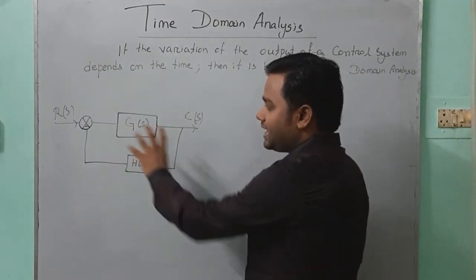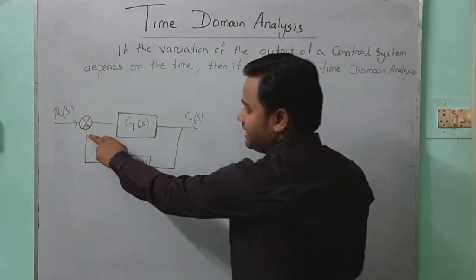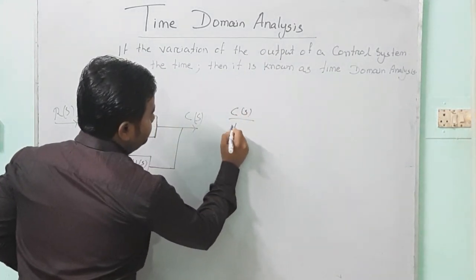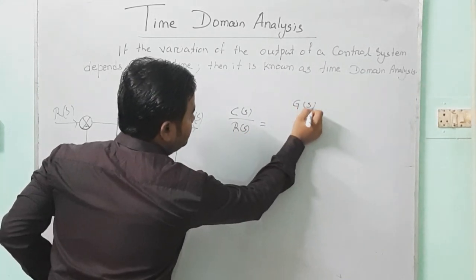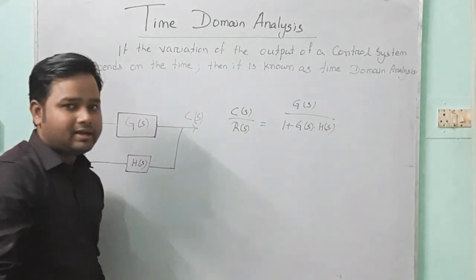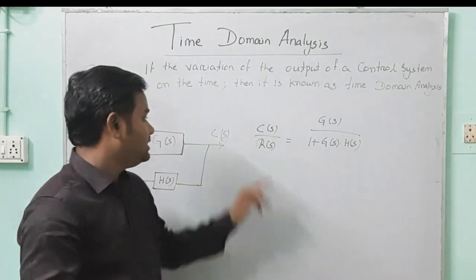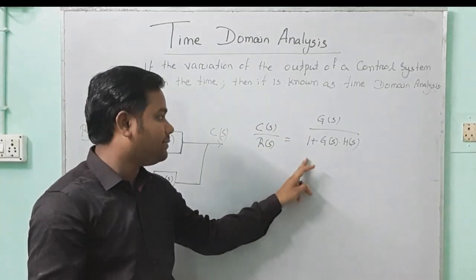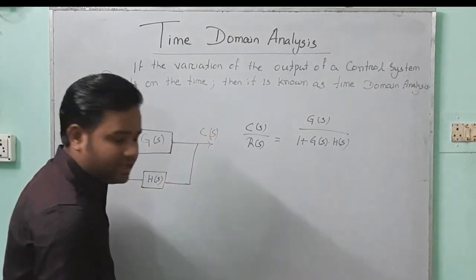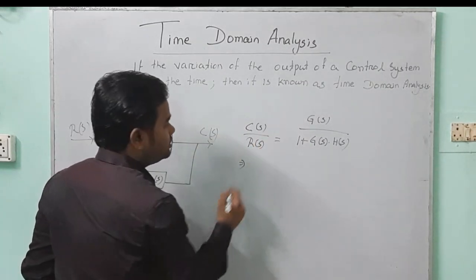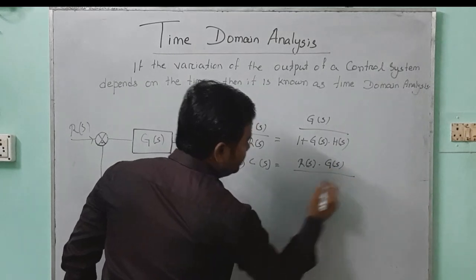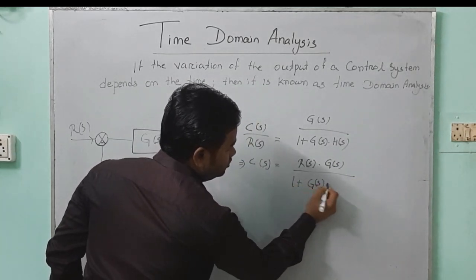We know the transfer function of this model — this is a negative feedback control system. The transfer function is: C of S divided by R of S is equal to G of S divided by 1 plus G of S into H of S. This is the transfer function of a negative feedback control system.